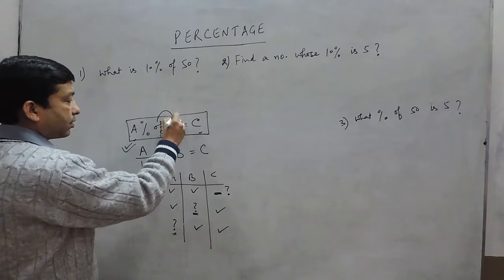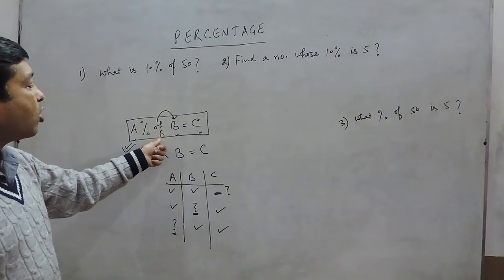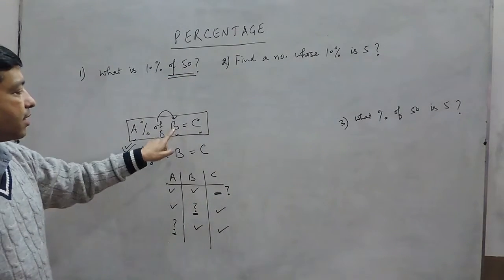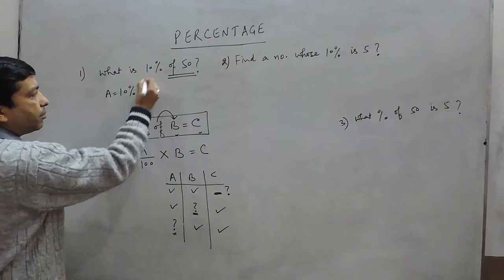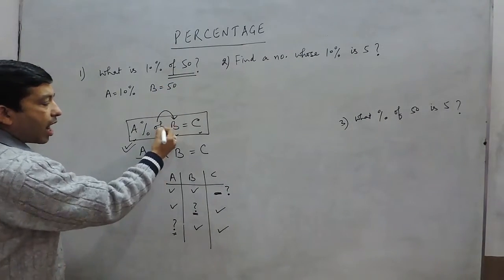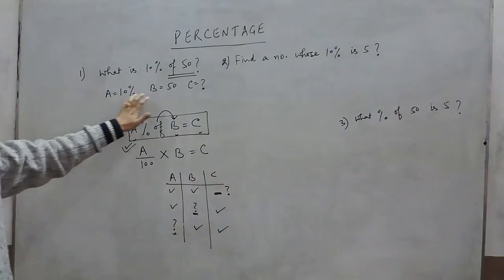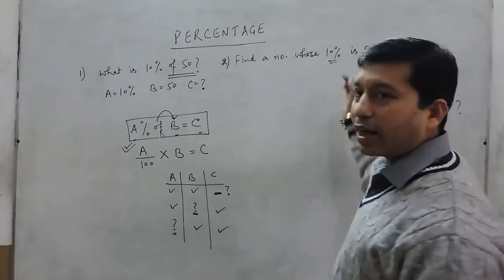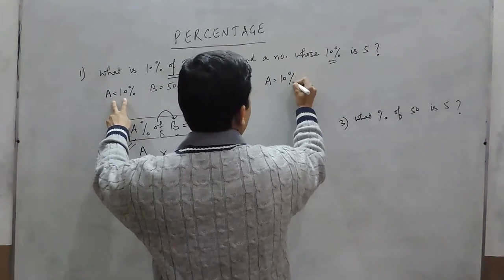As we said, A percent of B equals C. Whatever comes before 'of' is B. In the first question, the value after 'of' is 50, so B is 50. The percentage is always given as A, so A is 10%. The value of C we have to find out, since two values are given and the third is unknown. So in this question, A equals 10% and B equals 50.